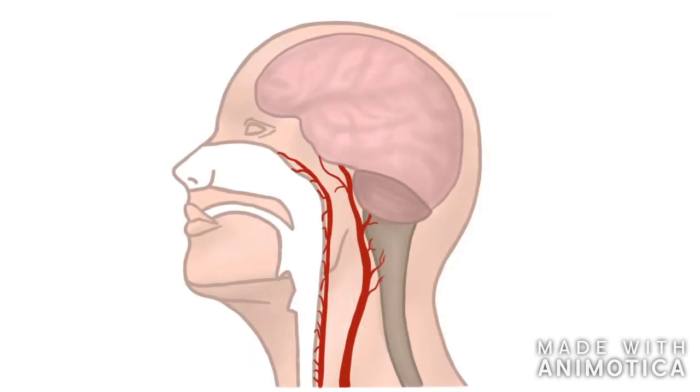Neisseria normally can live in someone's nose without causing harm. When a person's immune system is lowered, the bacteria can become pathogenic. To become pathogenic, it first has to overcome several barriers to finally enter the brain.